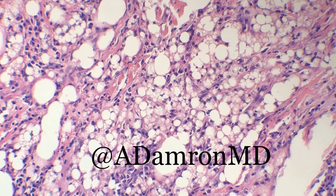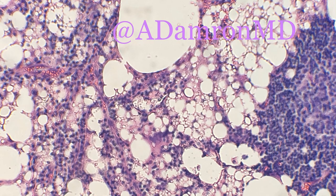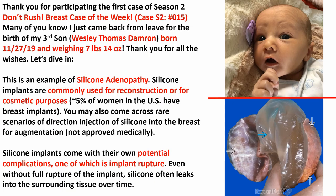Sometimes you can even have foreign body giant cell reaction to this, which is actually a helpful feature. One of the unique characteristics is if you actually flip your condenser, this material is all refractile — that lets you know it's more of a foreign material. This is a very good step to do if you're going down the wrong path thinking these are lipoblasts. Flip that condenser, and what you're going to see is all this material becomes refractile. Even without flipping the condenser, if you move up and down with your fine focus, you'll start seeing material in these vacuolated spaces. So what this case actually represented was silicone adenopathy.